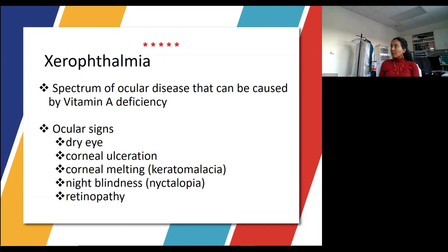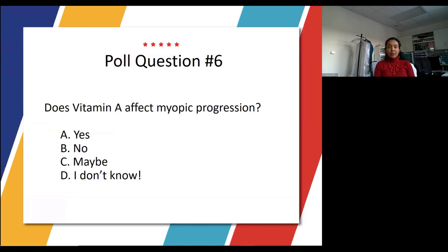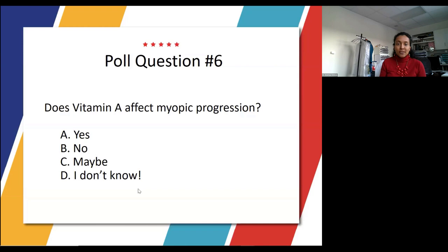We learned about ocular signs of vitamin A deficiency, but the next poll question asks: does vitamin A affect myopic progression? There were a few different responses — yes, no, maybe, I don't know. That question was actually studied in a paper which we'll go over next.